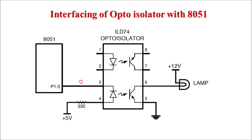When we provide logic 0 on P1.0, the LED will glow because its anode terminal is connected to the +5V supply. When the LED glows, it focuses light on the phototransistor, current flows through it, and the lamp glows. When we send logic 1, the device turns off, no current flows through the phototransistor, and the lamp turns off.